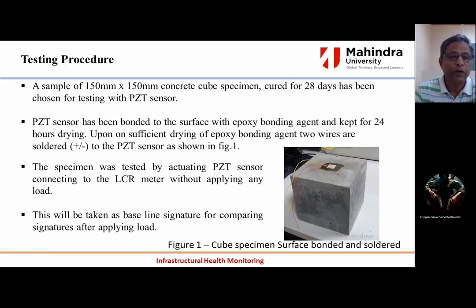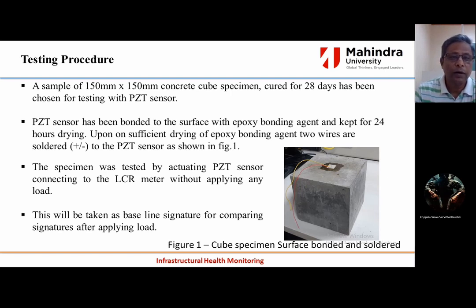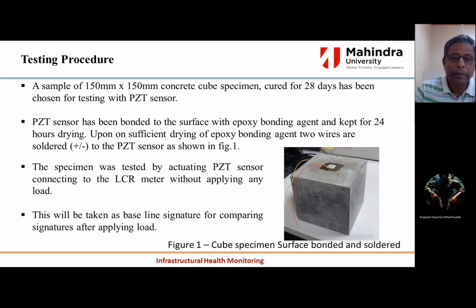The specimen is kept for 24 hours to dry. Upon sufficient drying of the epoxy bonding agent, two wires are soldered — plus and minus — to the PZT sensor as shown in the figure. The specimen was then tested by actuating the PZT sensor connected to the LCR meter without applying any load. This reading is taken as the baseline signature for comparing signatures after applying load.